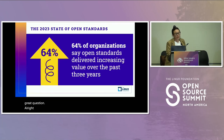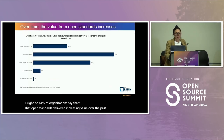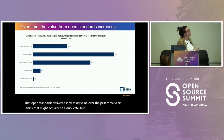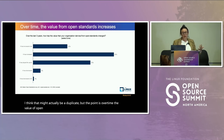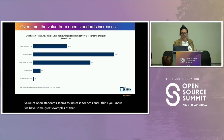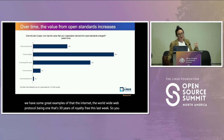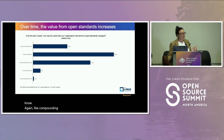64% of organizations say that open standards delivered increasing value over the past three years. Over time, the value of open standards seems to increase — we have great examples of that, like the worldwide web protocol, which has been 30 years of royalty-free access. Again, like compounding interest, these benefits just increase over time.